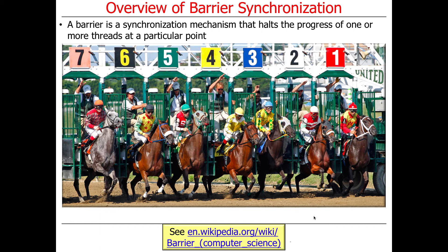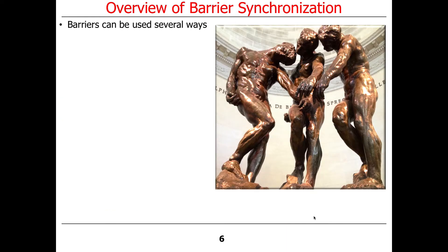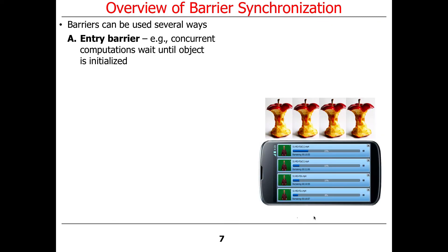Obviously it would not be a very fair race if the horses could just start running as soon as they got to the start — that wouldn't make it good. So that's an example of a barrier. There are a couple of different ways you can use barriers. One way, informed by the horse race example or like starting blocks for the 100-meter dash, is as an entry barrier.